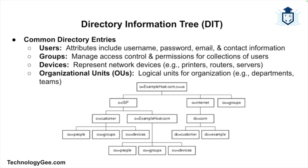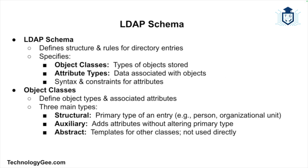In that example, uid=jdoe is the RDN for the user entry, ou=users is the RDN for the organizational unit containing the user, and dc=example, dc=com represents the domain components of the directory. Common directory entry types include users — containing attributes like username, password, email, and contact info — as well as groups for access control, devices such as printers and routers, and organizational units used to organize entries into logical units like departments or teams.